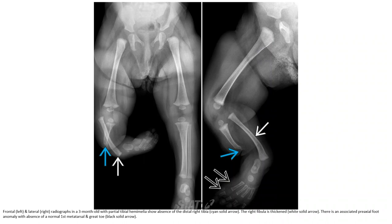Frontal and lateral radiograph in a 3-month-old with partial tibial hemimelia showing absence of the distal right tibia; the right fibula is thickened. There is an associated preaxial foot anomaly with absence of the normal first metatarsal and great toe.